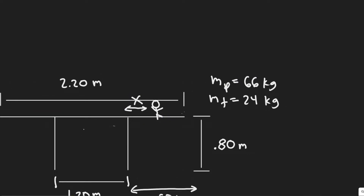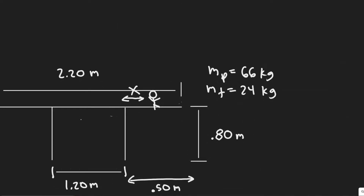What we're trying to find - the goal in this problem - is the distance they can sit away from the edge of the table. So this is the edge. The distance they can sit away without it tipping over, basically how far they will be able to sit before it tips over - how far from the edge.